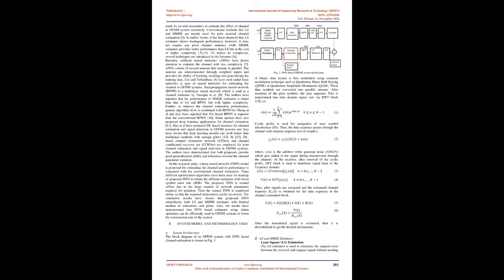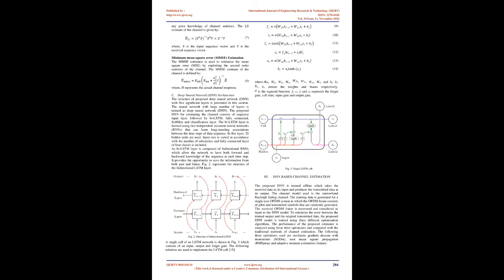In this research study, a deep neural network model is proposed for estimating the channel, and its performance is compared with the conventional channel estimators. Three different optimization algorithms have been used for training of the proposed DNN to obtain the efficient estimator with lower symbol error rate. The proposed DNN is trained offline due to the large number of network parameters required for updation. Then the trained DNN is employed online so that the required information can be recovered. The simulation results have shown that the proposed DNN outperforms both LS and MMSE estimators with limited number of sub-carriers and pilots. Also, the results have demonstrated that DNN-based estimator using Adam optimizer can be efficiently used in OFDM systems to boost the transmission rate of the system.